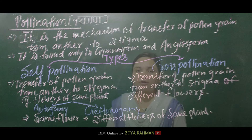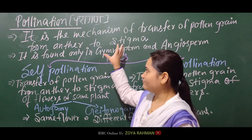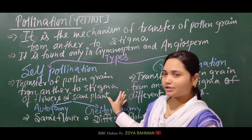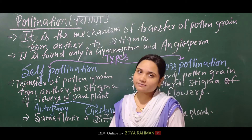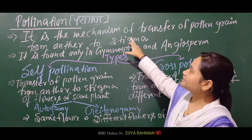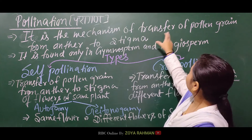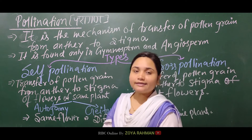Now we are going to start with the definition. It is the mechanism of transfer of pollen grains from anther to stigma — from the pollen-producing structure to the receptive female structure.